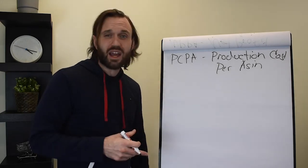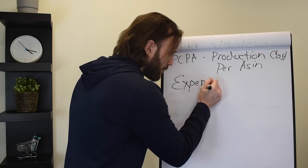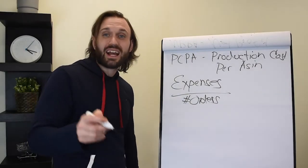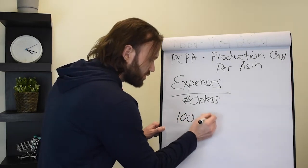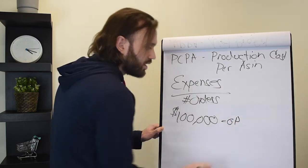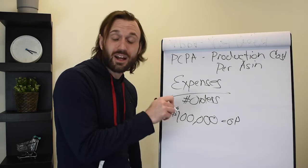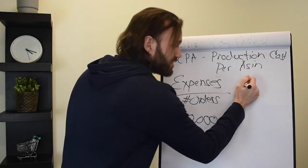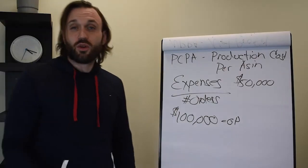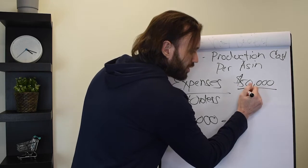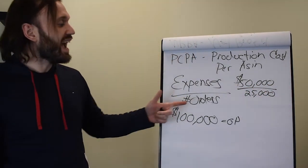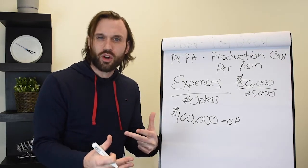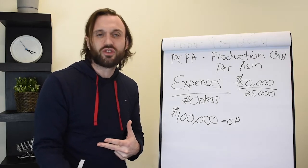So in order to calculate your PCPA or production cost per ASIN, you would take your expenses and divide them by that same number of orders. So let's say your expenses to make that gross profit before that we talked about of $100,000. So that was our gross profit. Our GP was $100,000. In order for us to make that gross profit of $100,000, we had to expense or spend in expenses $50,000. So we would divide or you would divide that same $50,000 by that same 25,000 orders.